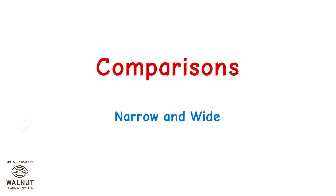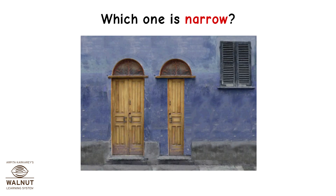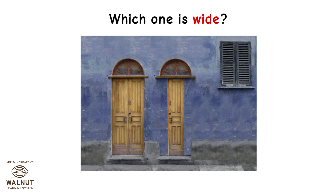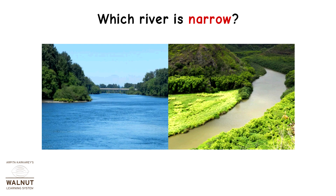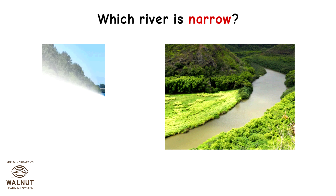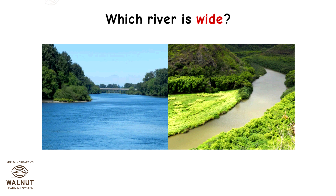Comparisons: narrow and wide. Which one is narrow? This one. Which one is wide? This one. Which river is narrow? This one. Which river is wide? This one.